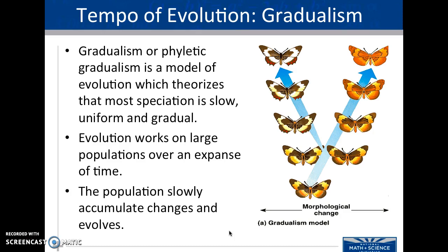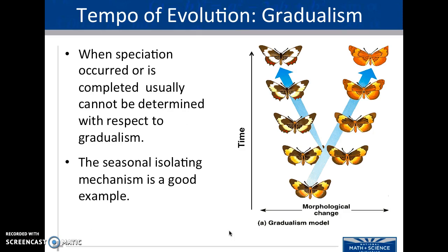We've looked at a couple of different ways that sympatric speciation can occur. The question is: how quickly does this happen? Because a lot of those examples talked about a mutation occurring and suddenly we see a new species. There are two theories on how evolution occurs and the tempo of evolution. The first is gradualism — the idea that speciation is really slow. Even if a mutation occurs, it takes a long time for those individuals to reproduce, produce more offspring with that mutation, and the population slowly accumulates changes as it evolves away from the original species.